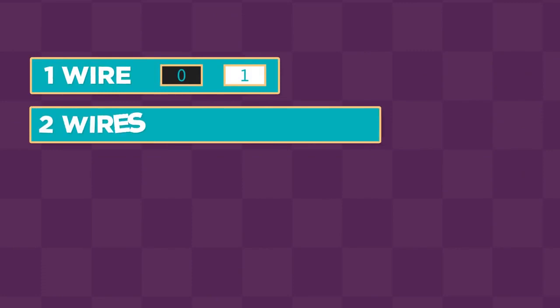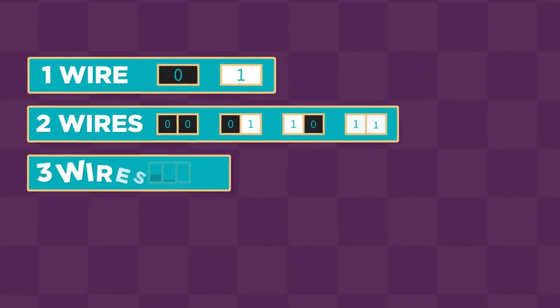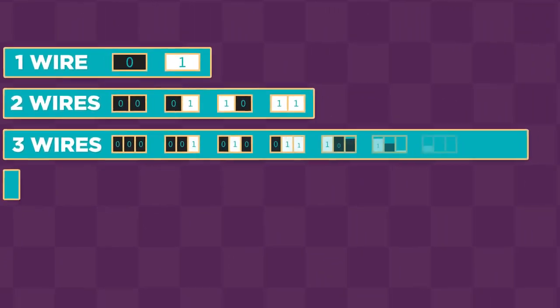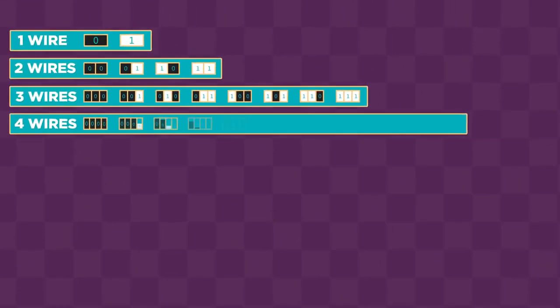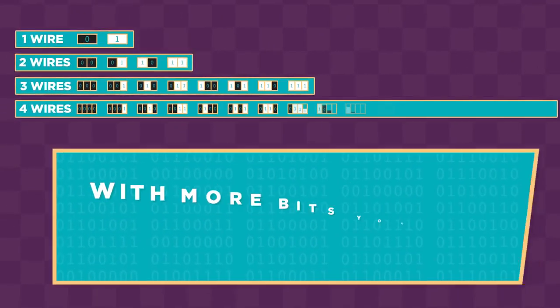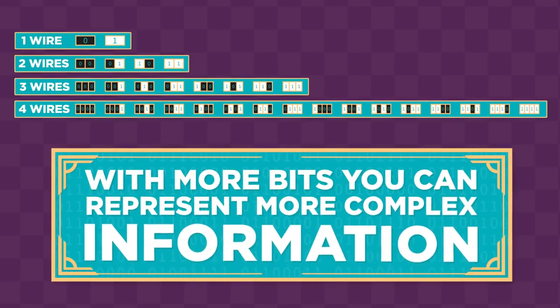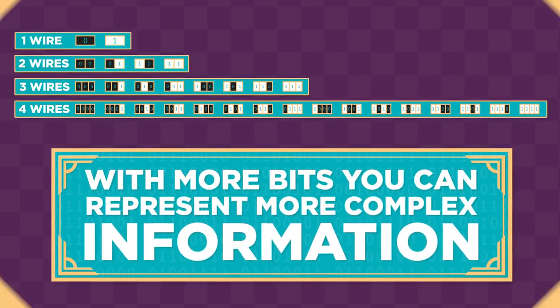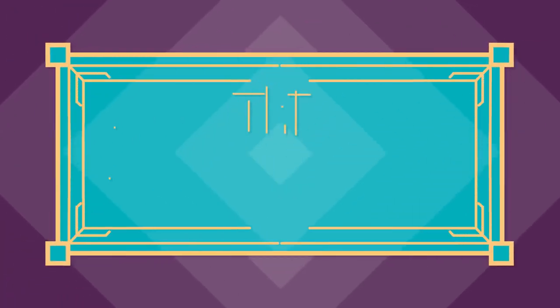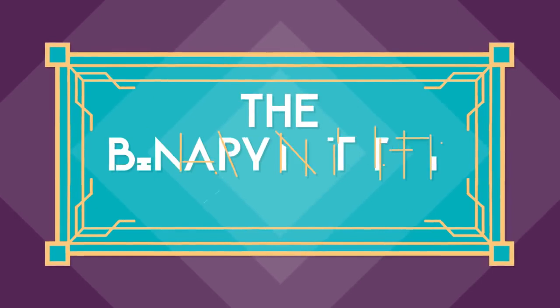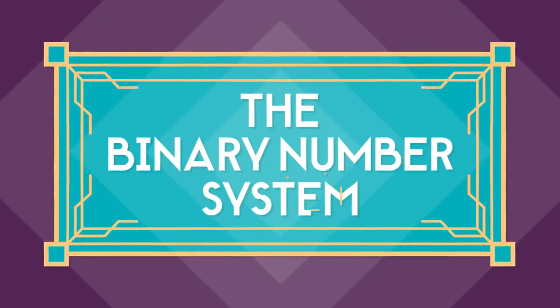If you use more wires, you get more bits — more ones and zeros. With more bits, you can represent more complex information. But to understand that, we need to learn about something called the binary number system.